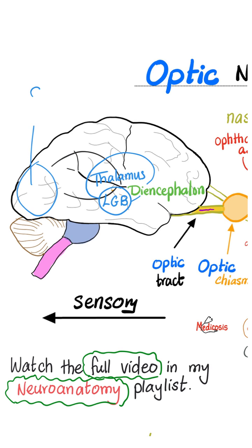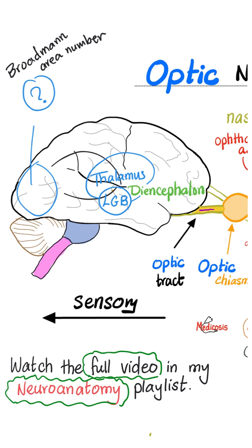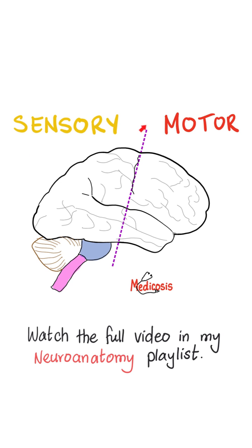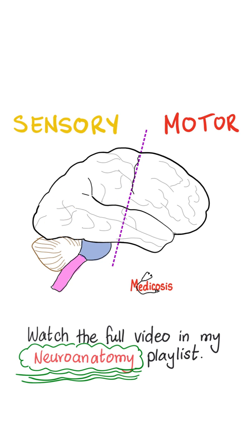What is the Brodmann area number at this part? Comment below. Remember, you draw your line in the sand — sensory is behind the line. See my neuroanatomy playlist for more.